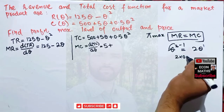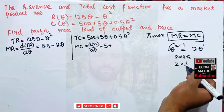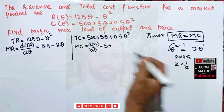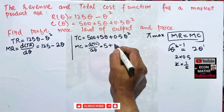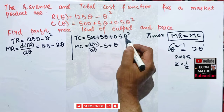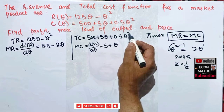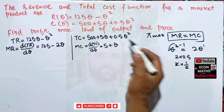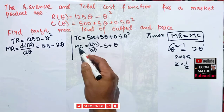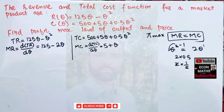Since 2 times 0.5 equals 1, the derivative of 0.5Q squared is simply Q. Therefore, marginal cost MC = 5 plus Q.